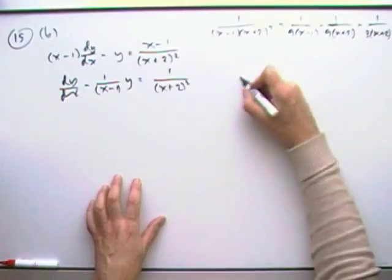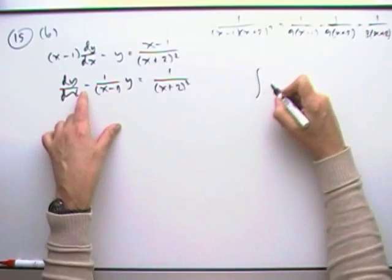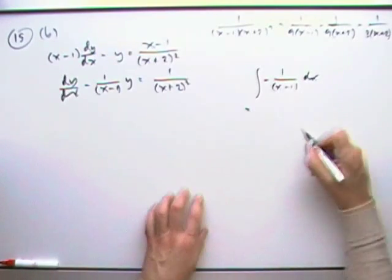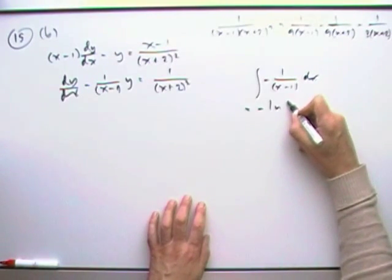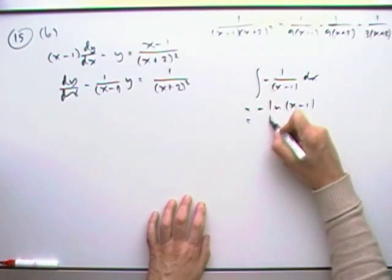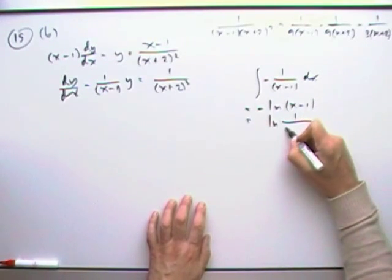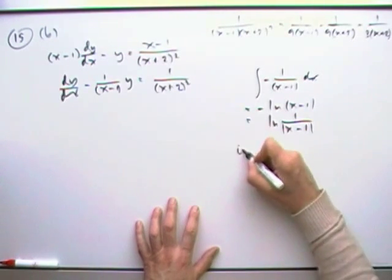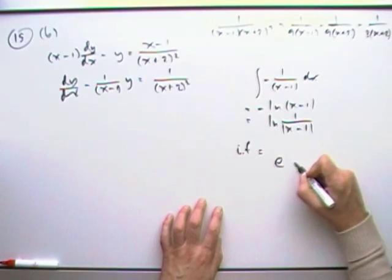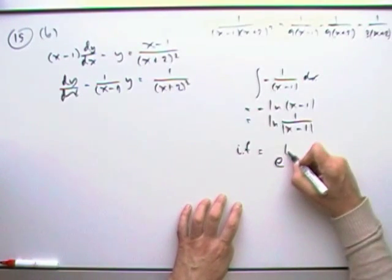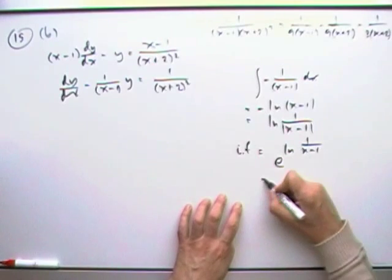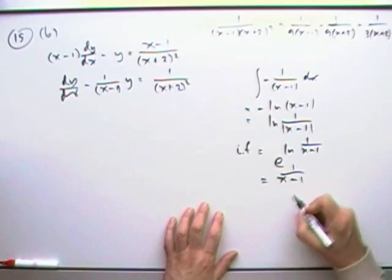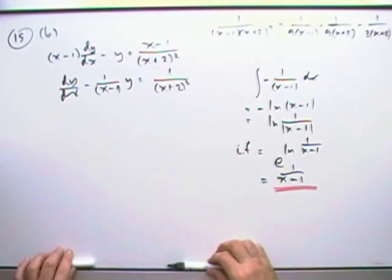Now, integrating factor. To get this integrating factor, I would take this part, this negative 1 over x minus 1, and integrate it. So that's going to produce negative ln of x minus 1, which is ln of 1 over x minus 1. I don't like these models, this thing looks so much like 1s, which means my integrating factor is going to be e to this integral. So it's e to the ln of 1 over x minus 1. So that's just going to be 1 over x minus 1. So there's the integrating factor, 1 over x minus 1.